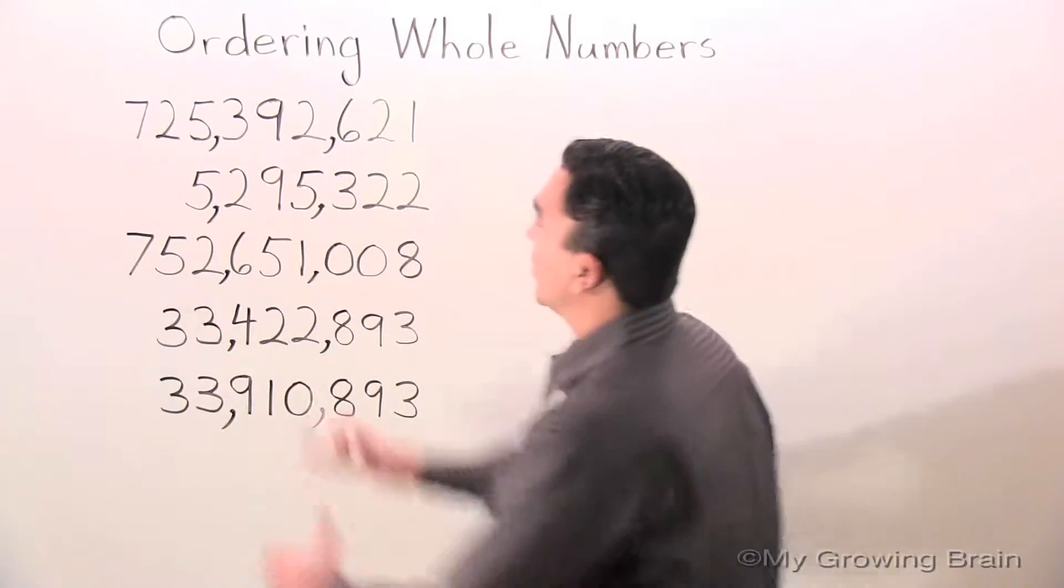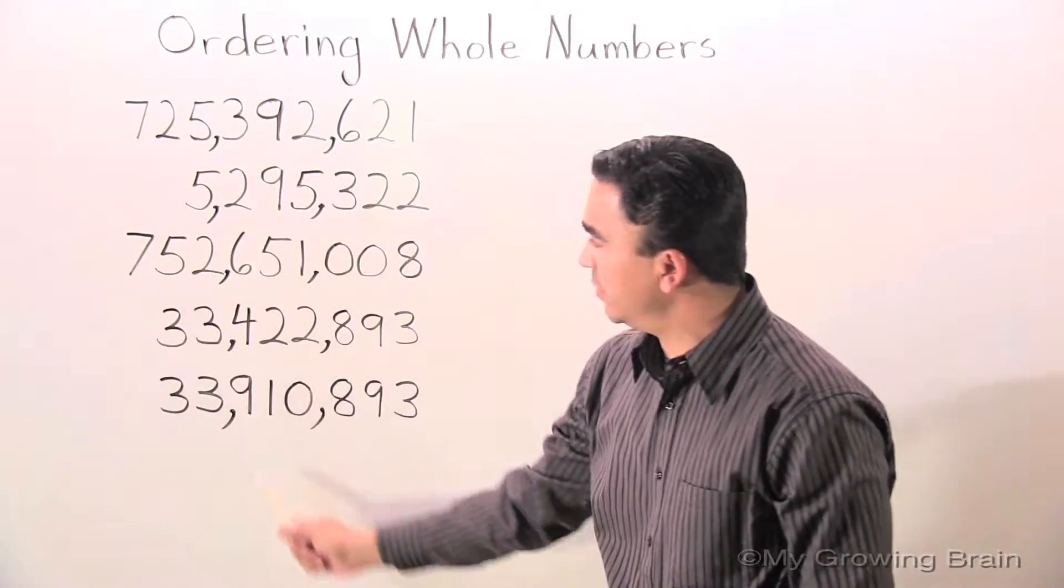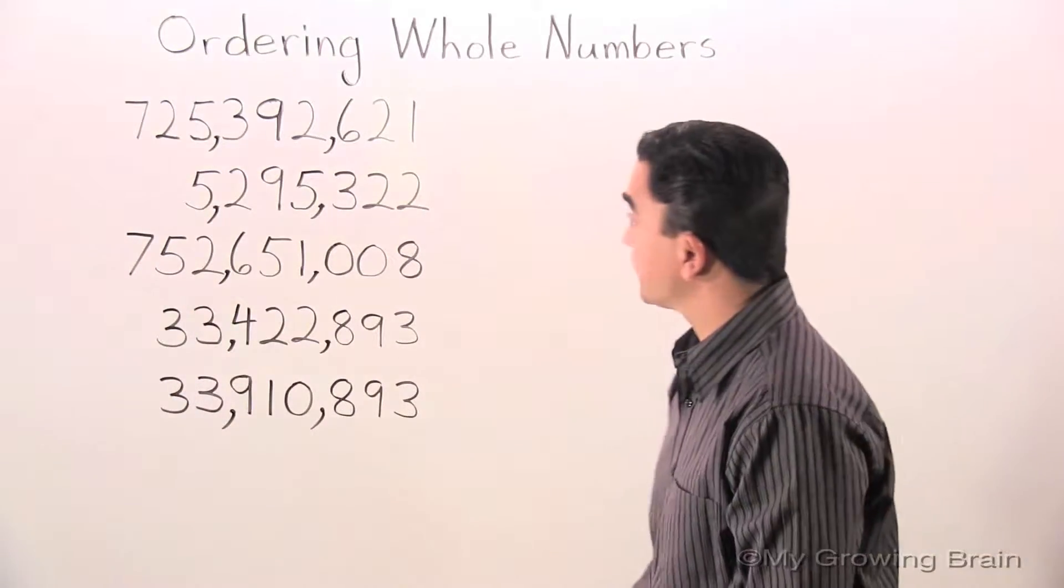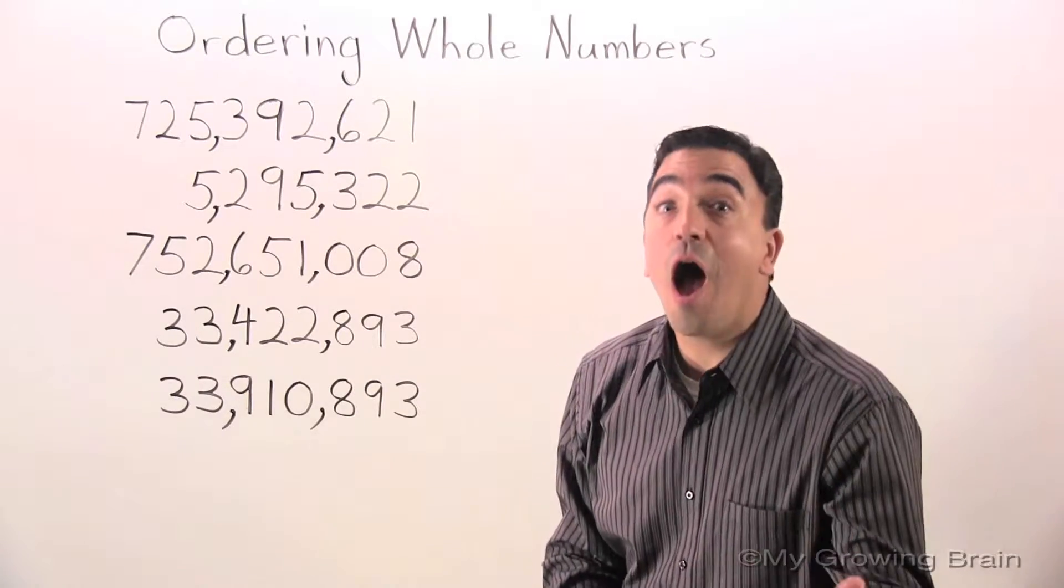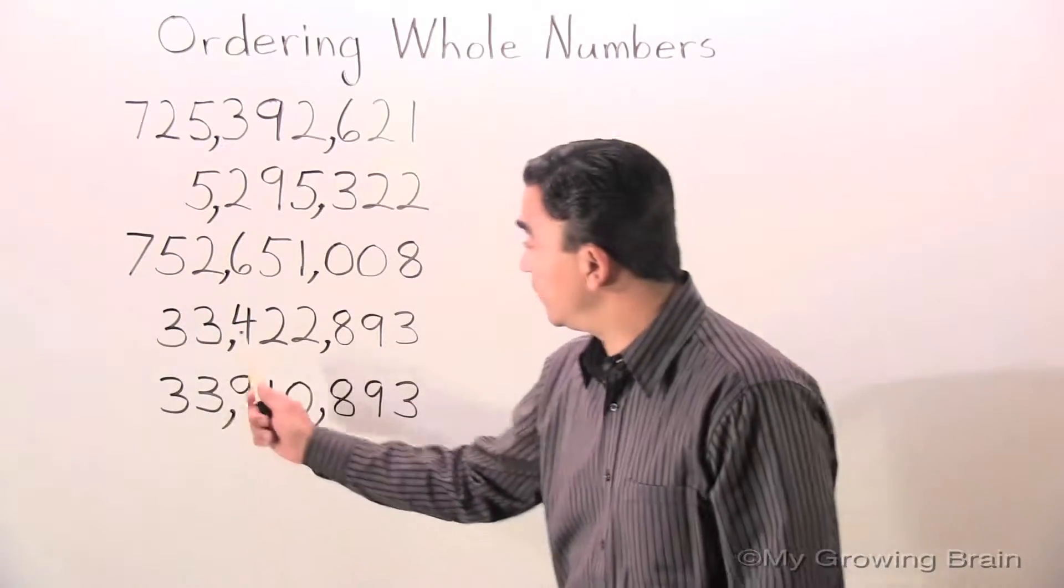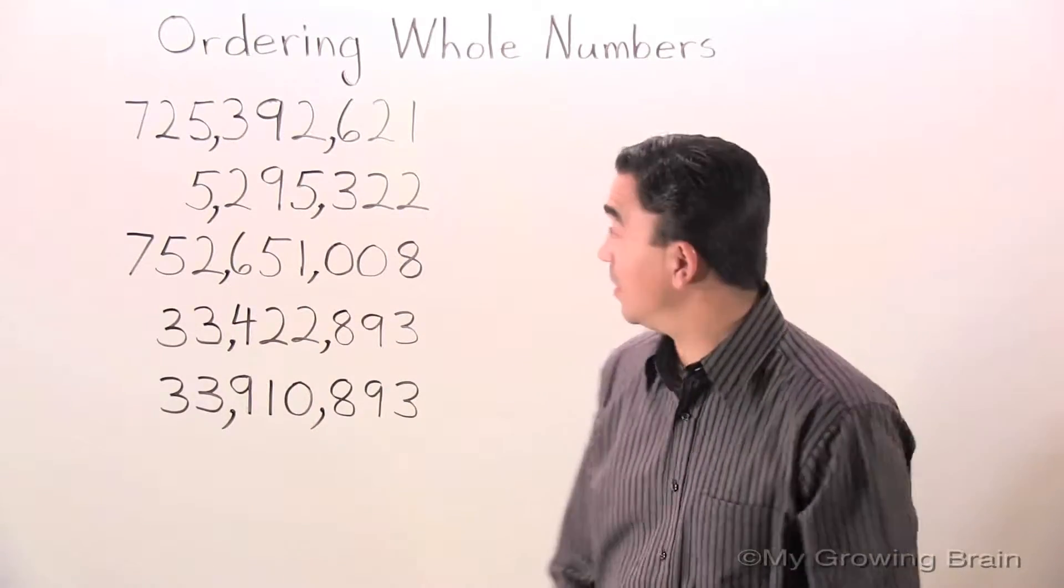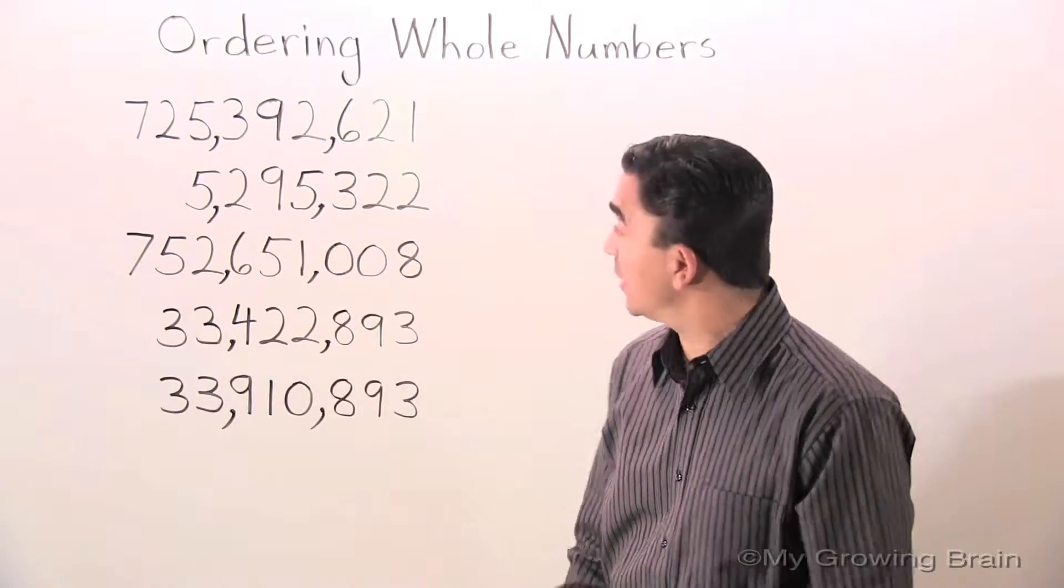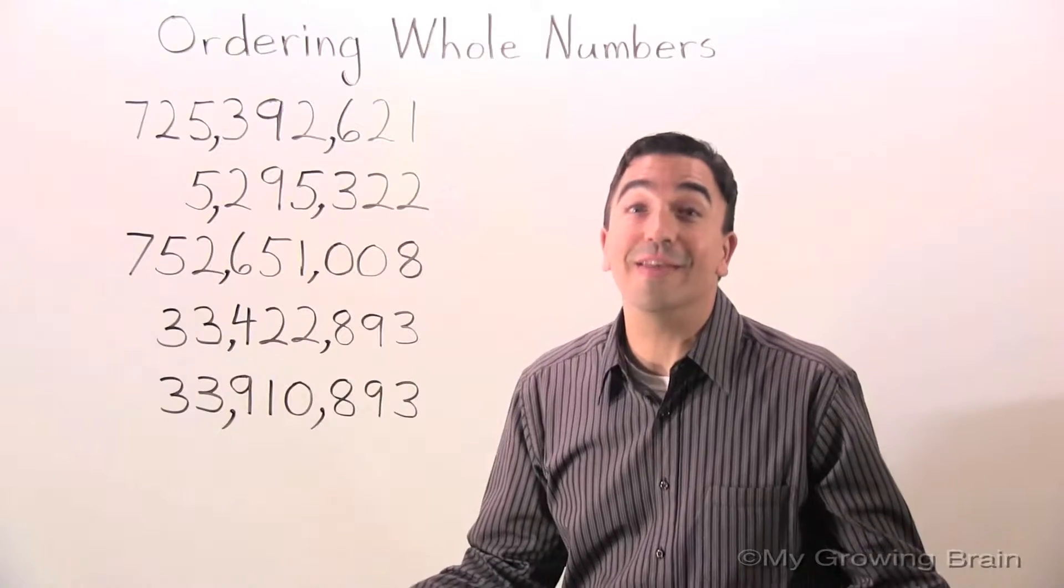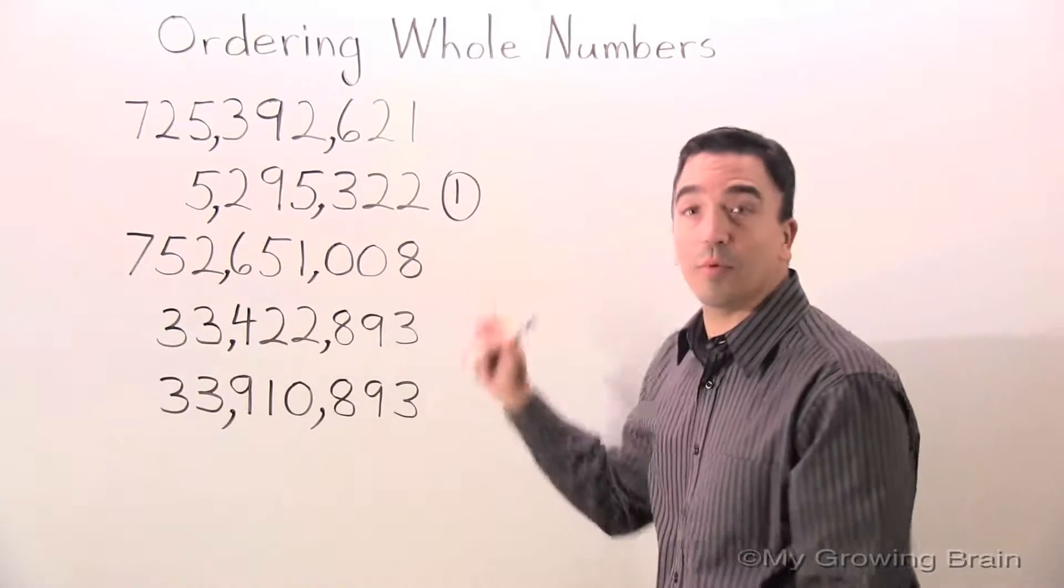The first thing I'm going to do is look in the millions period. We have the millions, ten millions, hundred millions. In the hundred millions we have three digits, in the ten millions we have two digits, in a million we have one digit. Therefore, 5,295,322 is the least! I am going to mark number one.